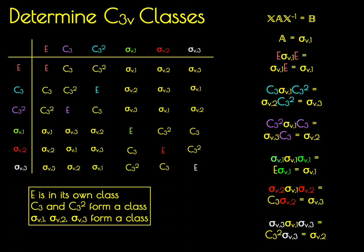So we've shown that there are three classes, one containing one element E, one containing two elements C3 and C3 squared, and one containing three elements sigma V1, sigma V2, and sigma V3.